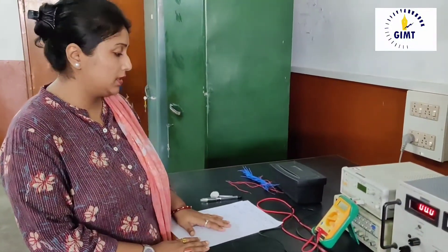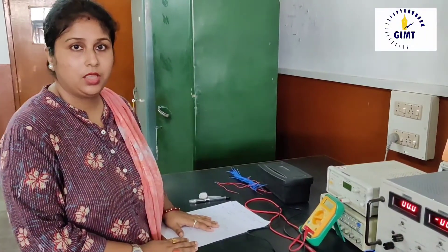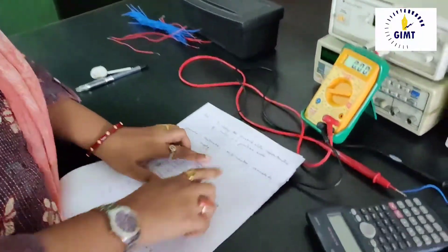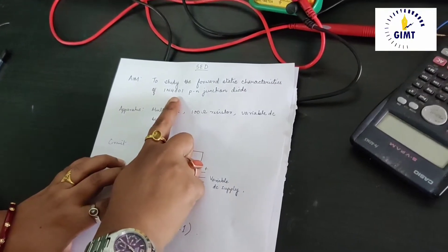The experiment we see is the forward characteristics of a normal PN junction diode. This is the aim of the experiment to study the forward characteristics of PN junction diode. The diode we are using here is IN4001.